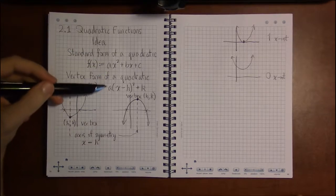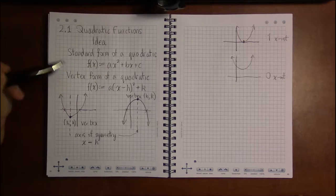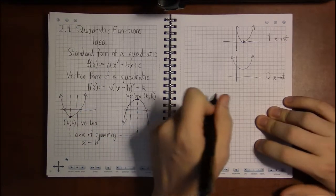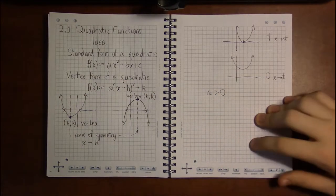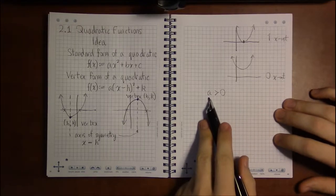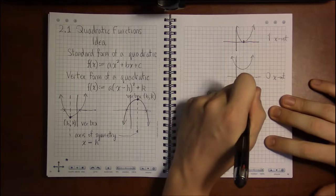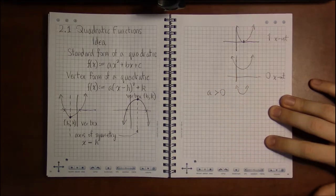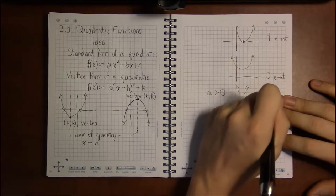Is greater than zero, if a is positive, then what you're going to get is a parabola that opens upwards and the vertex will be a minimum.